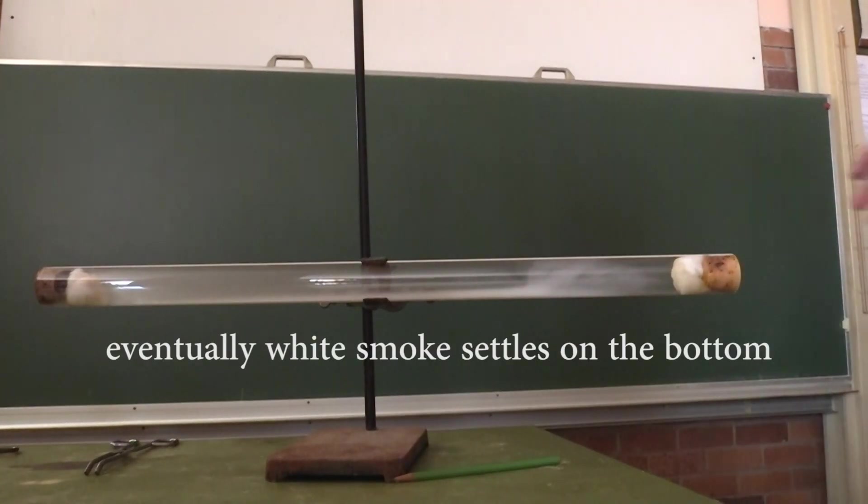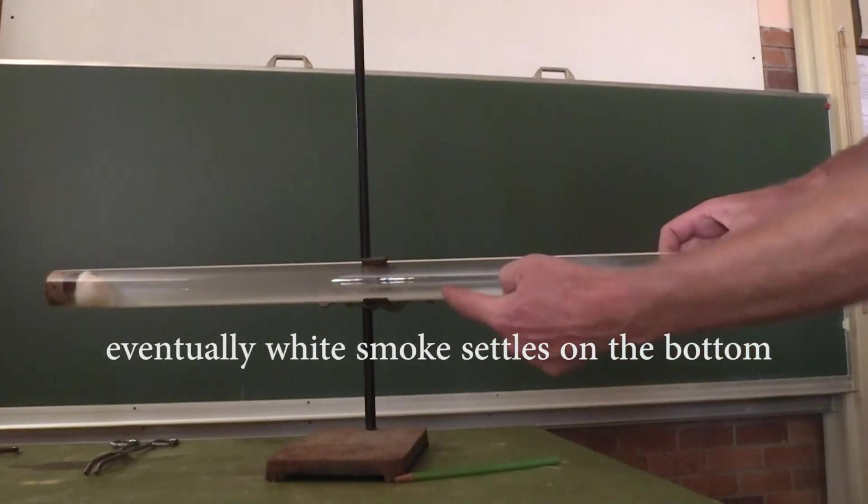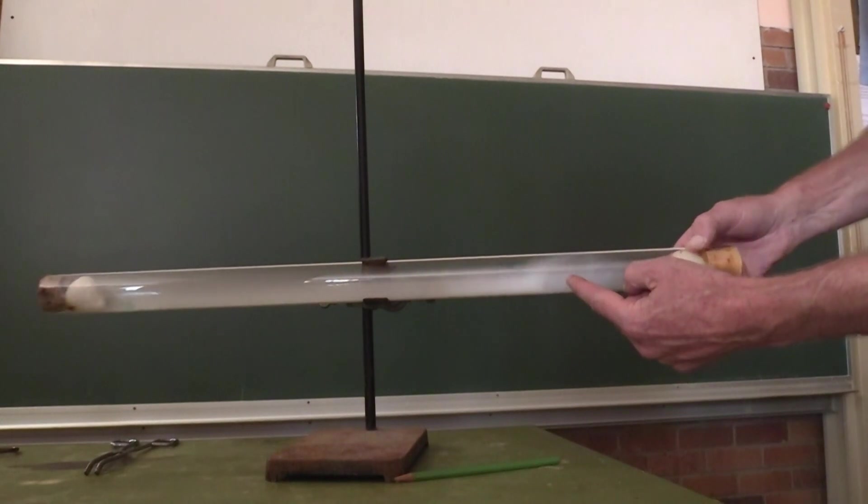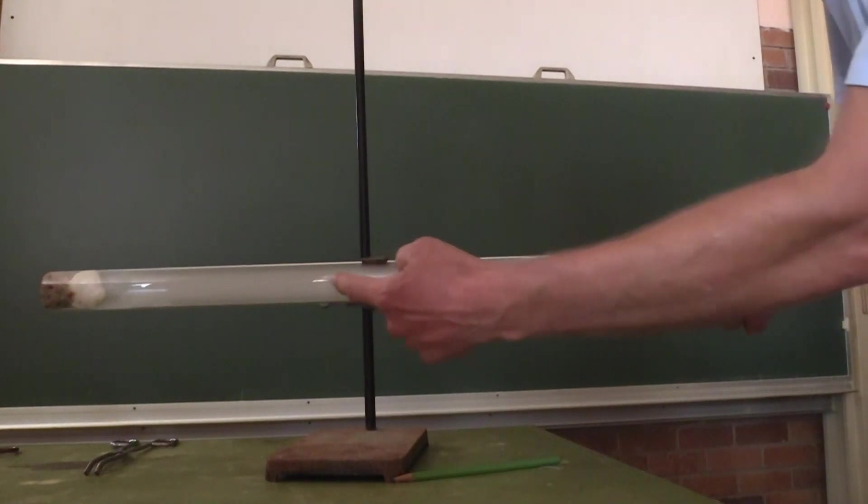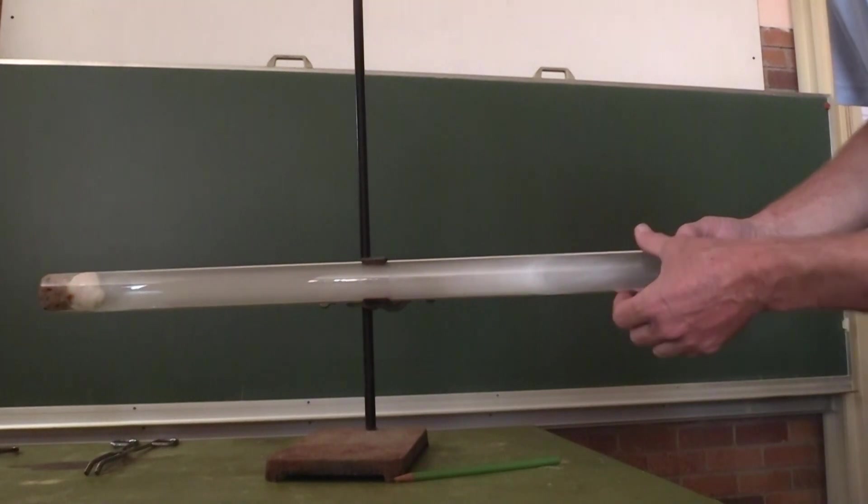By now the gases have diffused throughout the tube and the smoke settles on the bottom. As you can see the deposit over there.